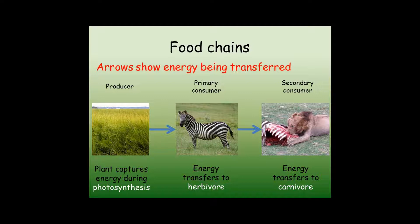We can show these different ways of getting the energy each species requires in a food chain. The arrows in a food chain show energy being transferred from one living thing to another. Every food chain starts with a plant, which captures sunlight through photosynthesis and uses this energy to make sugar from carbon dioxide and water.